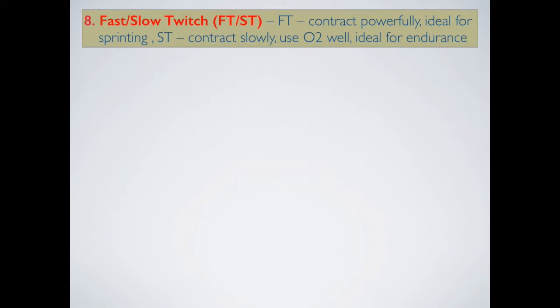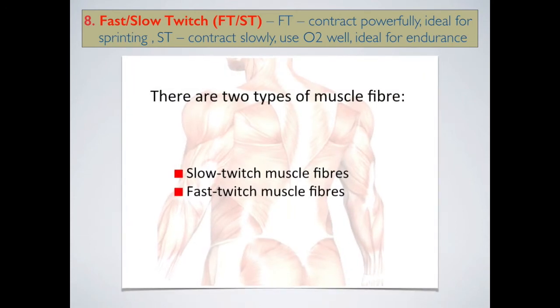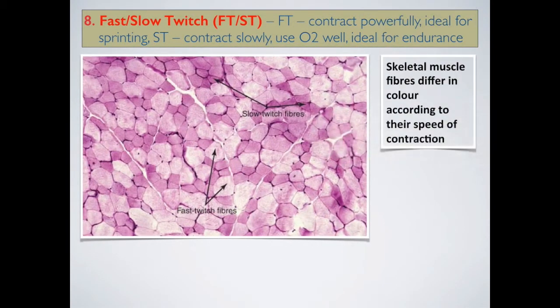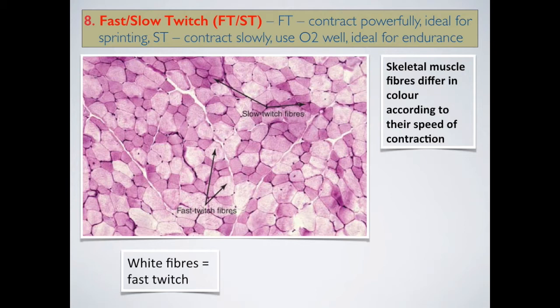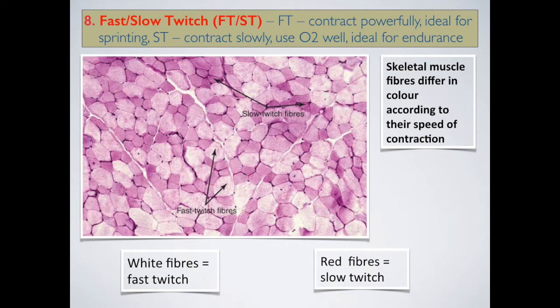Moving on to the effect on fast and slow-twitch muscle fibres. Fast-twitch fibres contract very powerfully and they are ideal for sprinting, while slow-twitch fibres contract slowly, use oxygen very well, and are ideal for endurance activities. Looking at muscle under the microscope, the fibres look a little different in colour. Slow-twitch muscles appear a darker red or purple colour, and fast-twitch fibres look much lighter — because of the increased myoglobin within the slow-twitch fibres, which is the red compound that contains oxygen. So white fibres are fast-twitch, and red fibres are slow-twitch, and skeletal muscles differ according to speed of contraction.